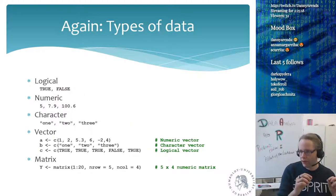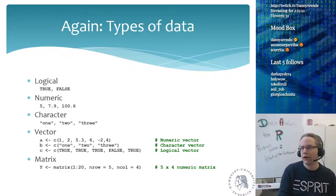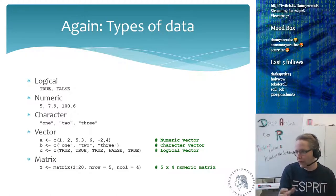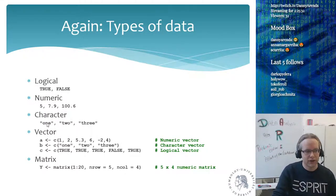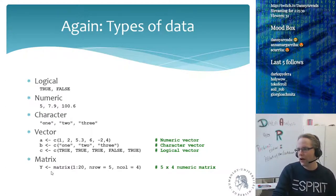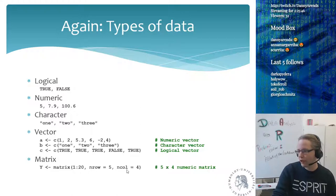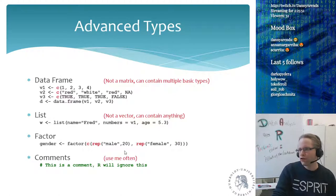Types of data: you have logicals which can be true or false, you have numerics which are any number, you can have characters which are single characters, words, letters, or sentences — you can have as many characters within the brackets as you want. We have vectors which can be numeric, character, or logical, and we have matrices which can be created using the matrix keyword. A data frame is a matrix, but more advanced.